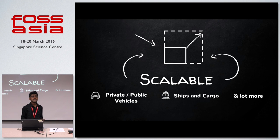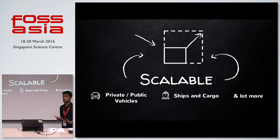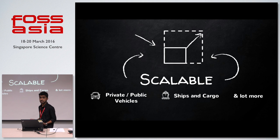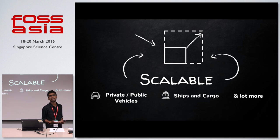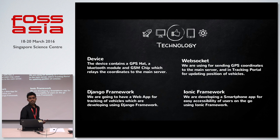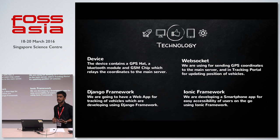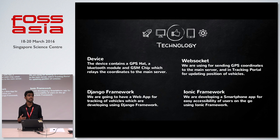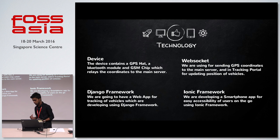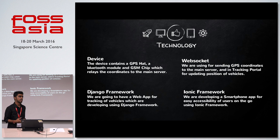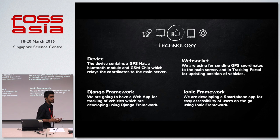This idea is not only restricted to trucks — it is scalable. You can install this in private vehicles, public vehicles, ships, cargos, and cargo containers. For the software stack, the device contains a GPS hat, a Bluetooth module, and a GSM chip which relays coordinates to the main server. We'll use Socket.IO for the connection, Django for the web application, and the IONIC framework for the mobile application.